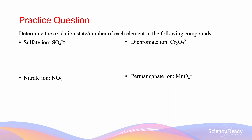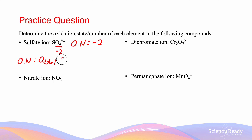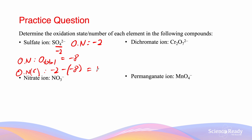Let's look at these examples: determine the oxidation state or number of each element in the following compounds. For the sulfate ion SO₄²⁻, because sulfate has a charge of 2−, its oxidation state is going to equal −2. Oxygen is going to have an oxidation state of −2 each, and since there are four oxygens, the oxidation number of all the oxygens combined equals −8. That means the oxidation number of sulfur is going to equal −2 minus −8, which equals +6.